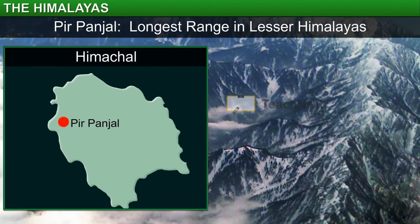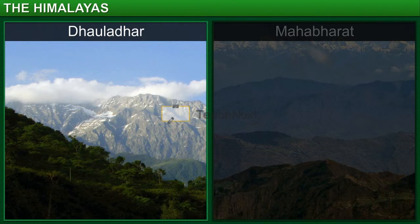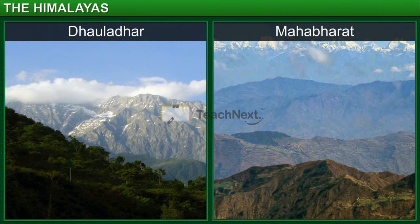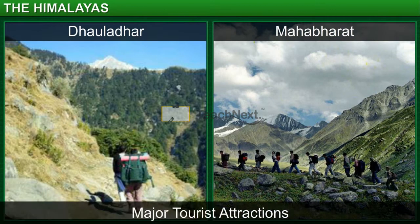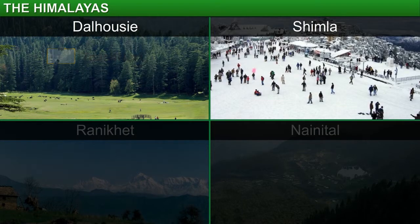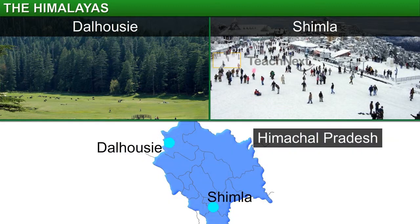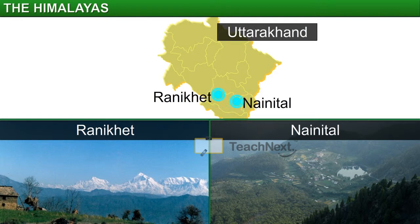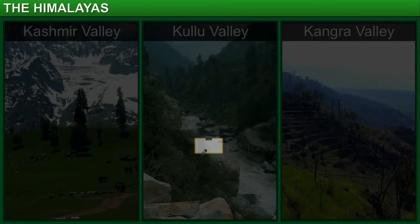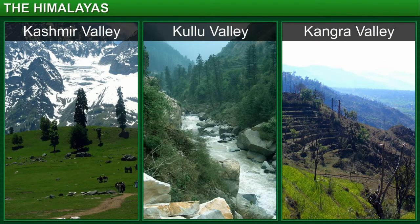The Pir Panjal is the longest range in the Lesser Himalayas. The other notable ranges are the Dhaula Dhar and the Mahabharat. These ranges are famous for their beauty and are a major tourist attraction for people the world over. The Himachal range is also well known for its hill stations such as Dalhousie, Shimla, Ranikhet, and Nainital. Dalhousie and Shimla are located in Himachal Pradesh, while Ranikhet and Nainital are part of Uttarakhand. The most picturesque valleys — the Kashmir, Kullu, and Kangra valleys in Himachal Pradesh — are part of this area.